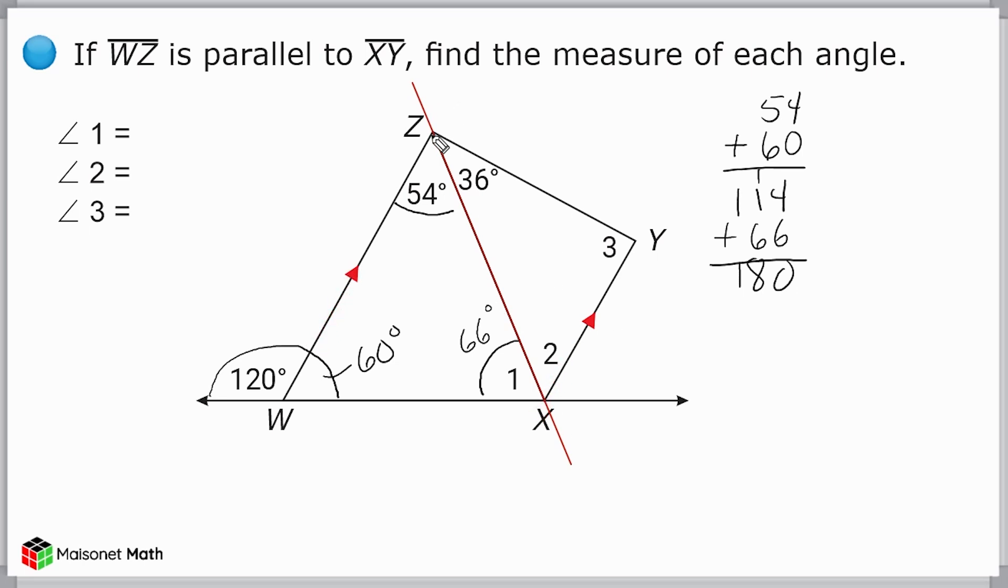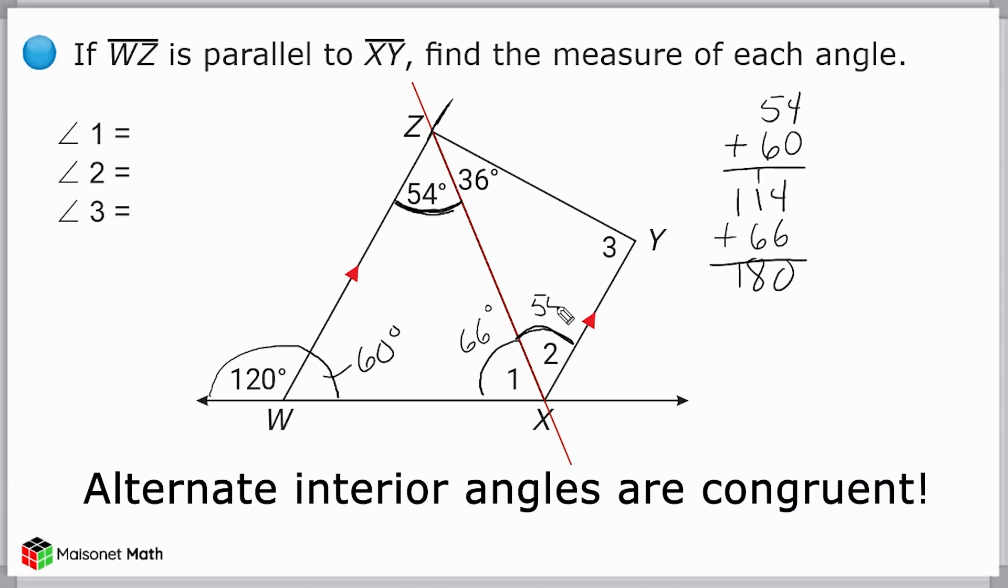One thing we should know about transversals and parallel lines is they form alternate interior angles. For example, if we take a look at this angle right here, we see it is 54. And if we go to the alternate side of our transversal, this angle right here would be congruent to this angle here. So angle 2 is 54 degrees because these two angles are alternate interior angles.